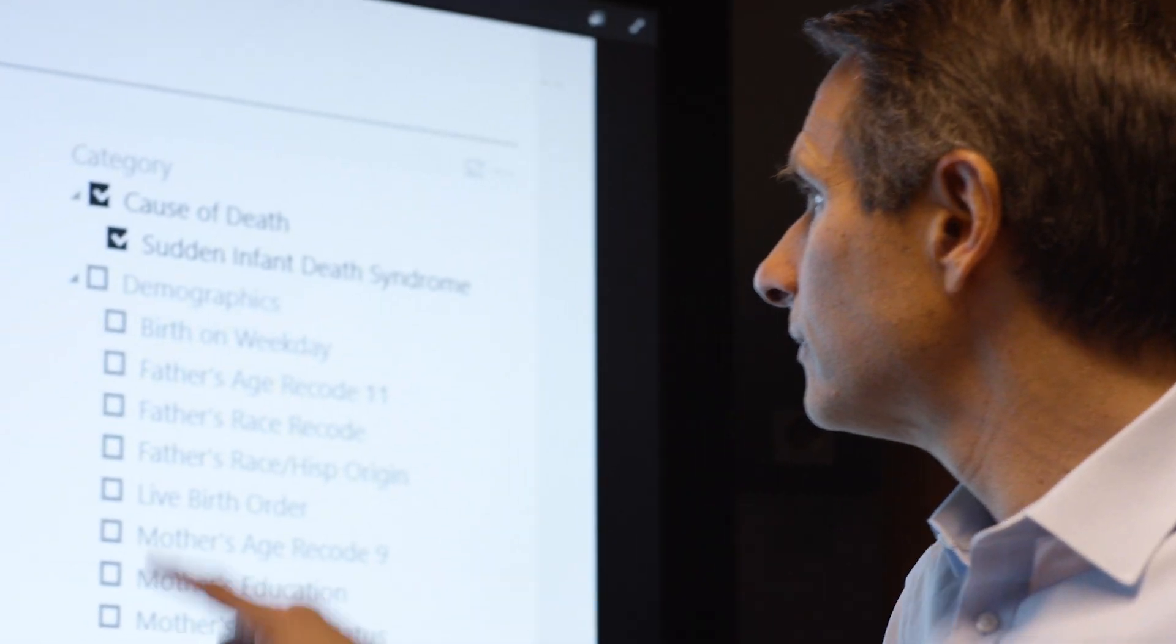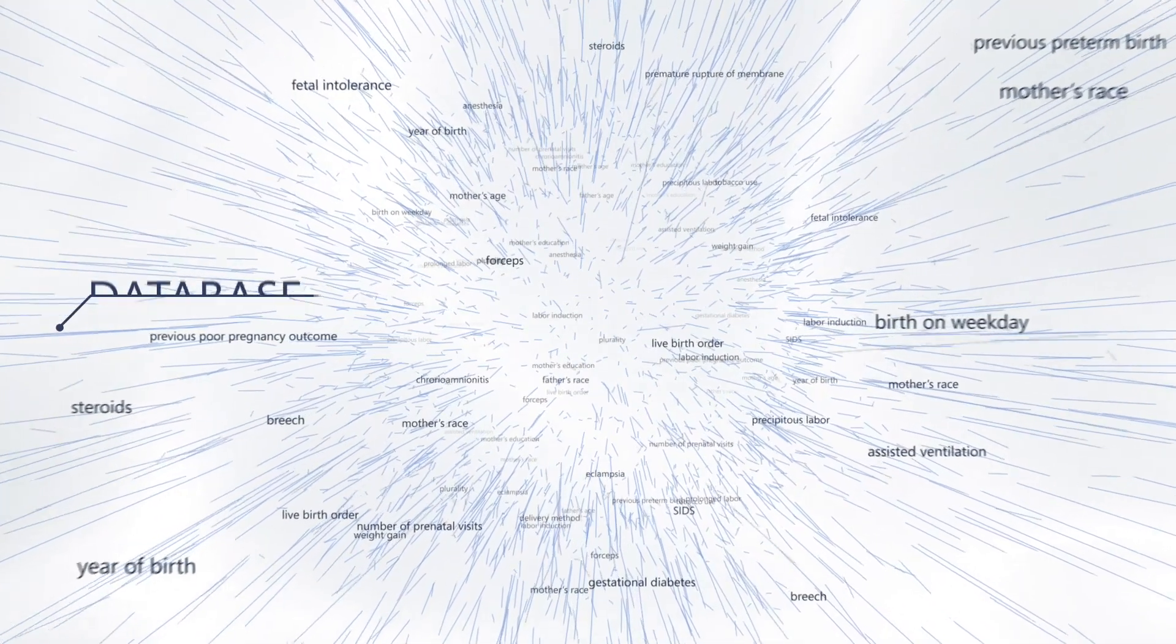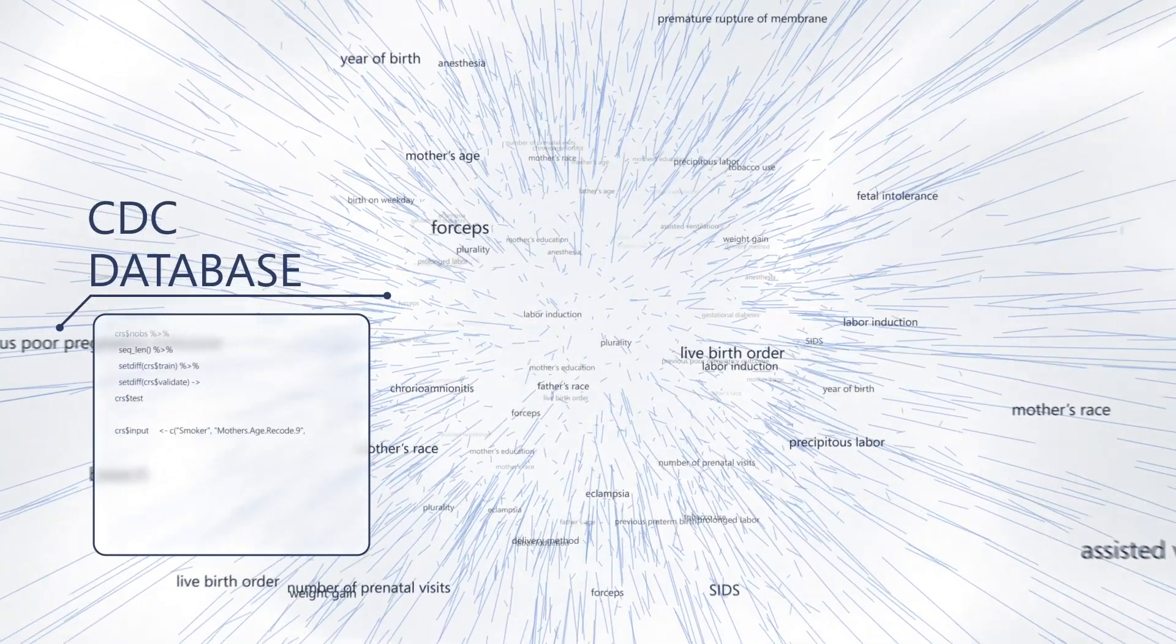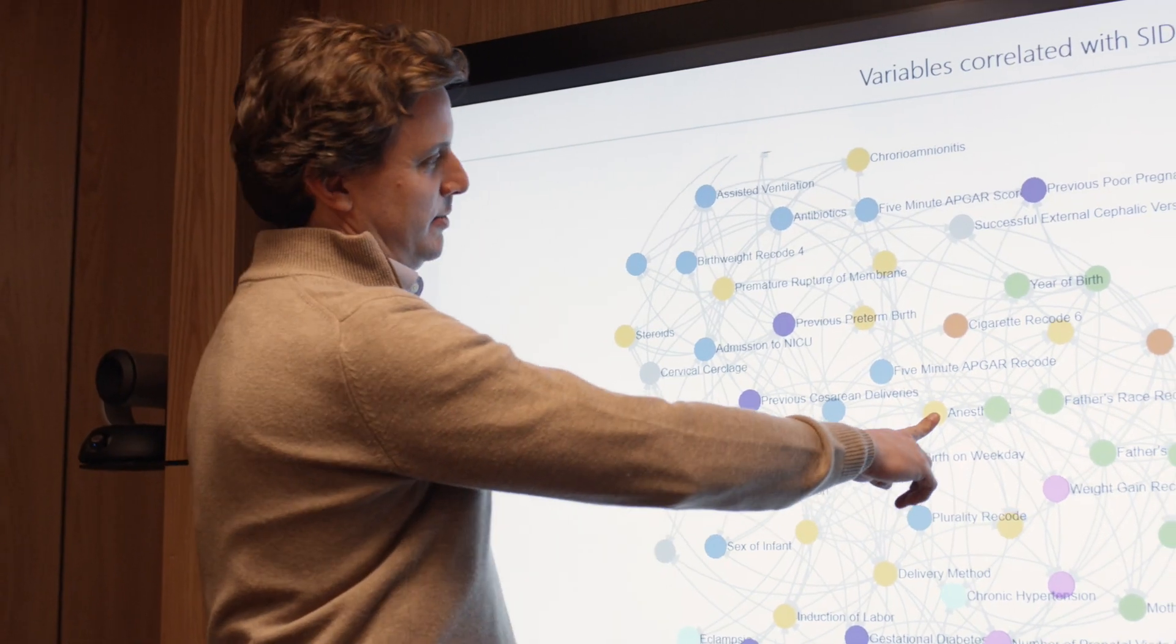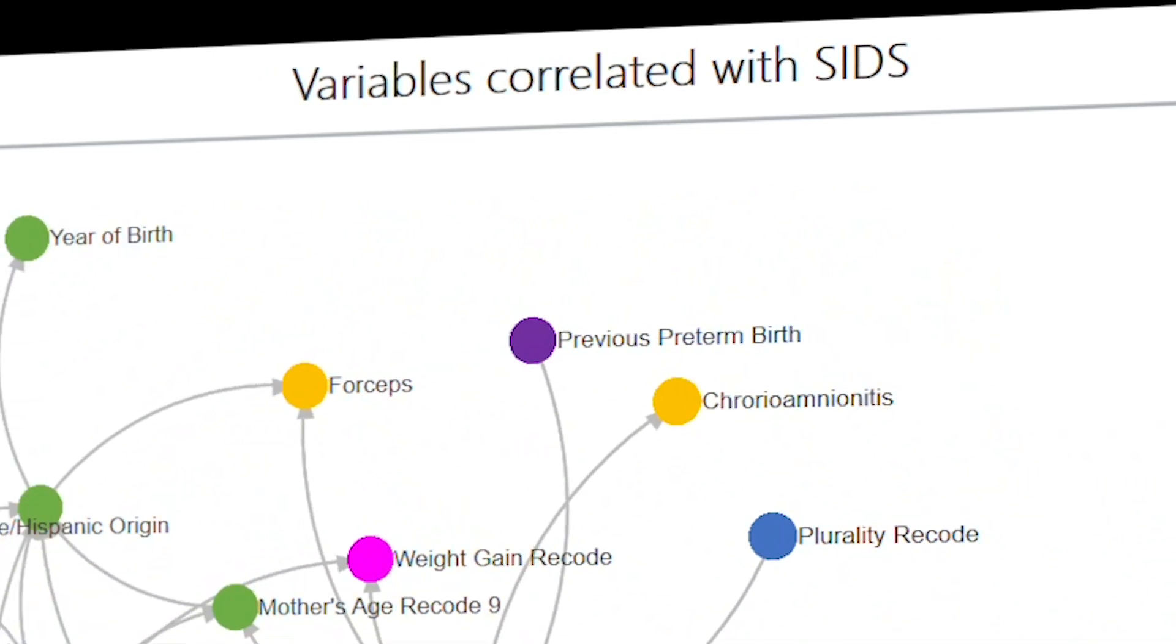The Microsoft Data Science team took publicly available CDC data of 26 million births and deaths and ran Microsoft AI on it. They discovered new correlations that showed statistical increases in SIDS.